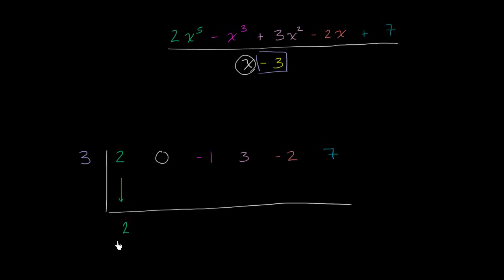So we'll bring down this 2, and then multiply the 2 times 3. 2 times 3 gives us 6. 0 plus 6 is 6. And then we multiply that times the 3, and we get positive 18. Negative 1 plus 18 is 17.